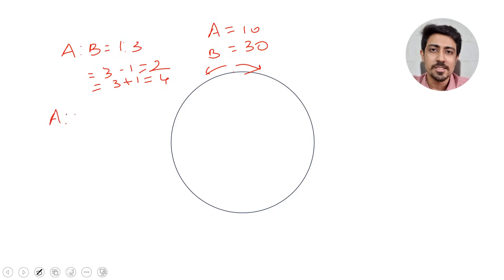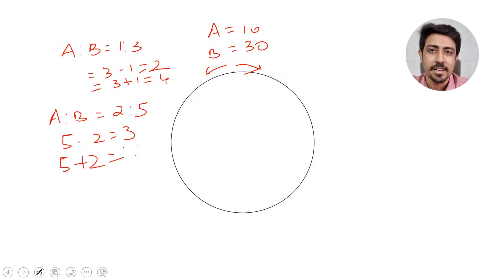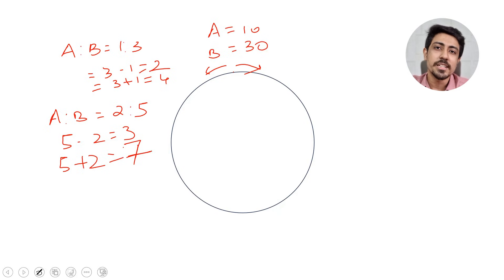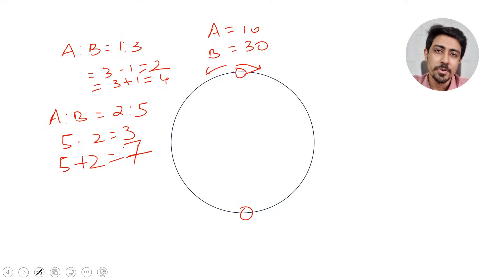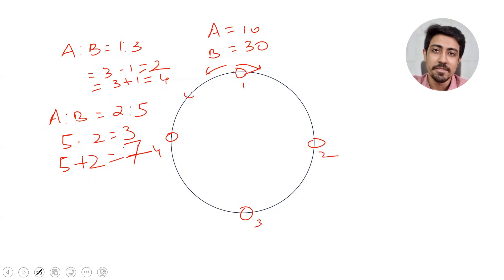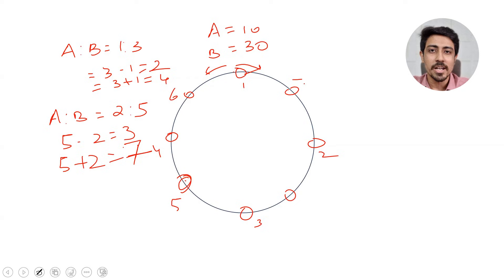Similarly, suppose the ratio of speed is 2:5. Then the number of points where they meet running in the same direction will be 5 minus 2, that is 3. If they are running in the opposite direction, it will be 2 plus 5, that is 7. Remember, the number of points where they meet will be equidistant from each other. That is, if they are running at 1:3 in the same direction, they will meet at two particular points that will be diametrically opposite to each other. If running in opposite directions, they meet at four points equidistant at four sides of the circle. Whether it's 8 or 7 points, all those points will be equidistant from each other — this is very important to understand.